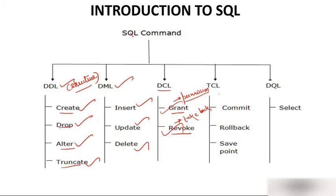TCL — Transaction Control Language — includes COMMIT, ROLLBACK, and SAVEPOINT. Once every operation of a transaction is completed, it performs a COMMIT. If some operations of the transaction have not been completed, we use ROLLBACK. SAVEPOINT is a point from where we can restart and recheck — it is generally used for debugging. Finally, DQL — Data Query Language — has one main command: SELECT.